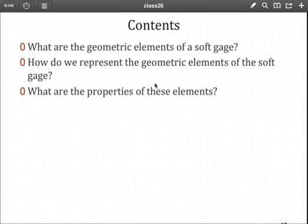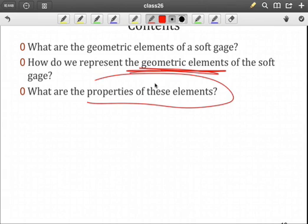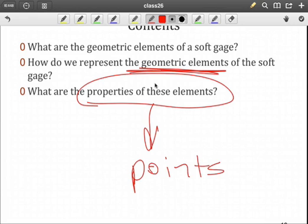What we're going to look at today are the geometric elements of the soft gauge. Of course, those are based upon fundamental geometric principles. Hopefully, a lot of this will be review. How are we going to represent these geometric elements, the lines, the circles, and so forth, that have to be used in the soft gauge? And then, what are the important properties of these elements that ultimately will relate to our set of points that we talked about last time?